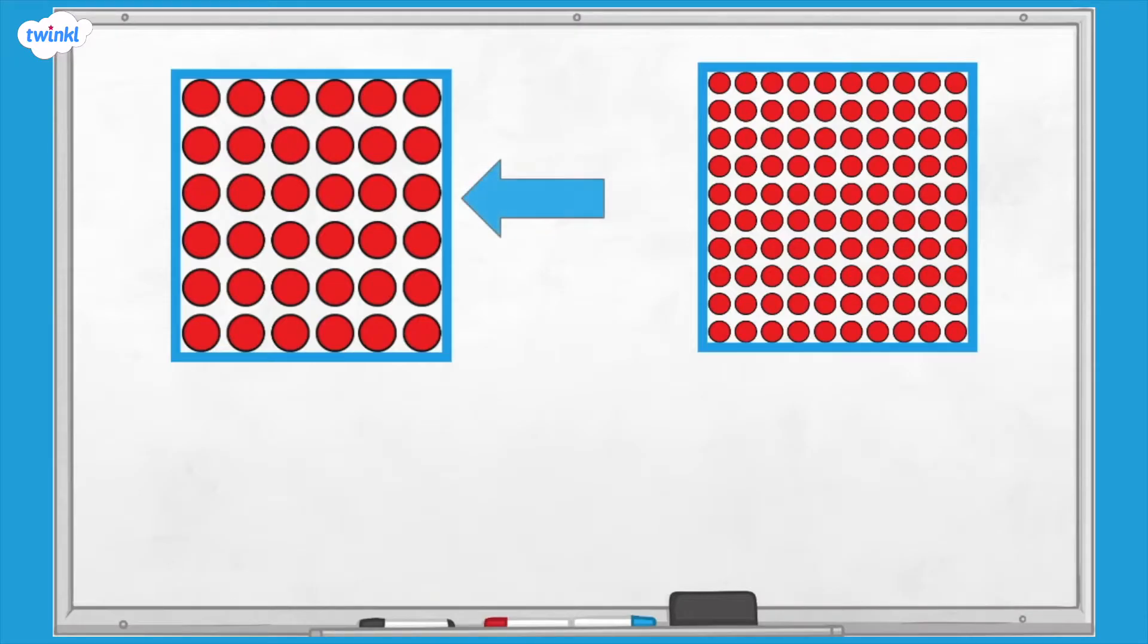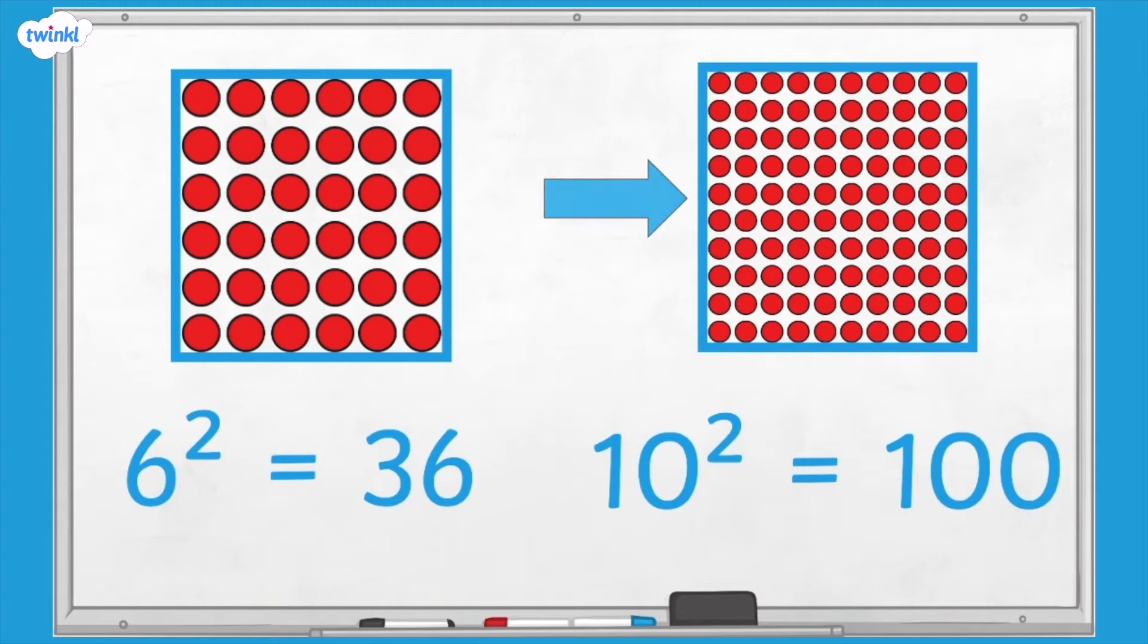This array represents 6 squared, which is 36, and this one represents 10 squared, which is 100.